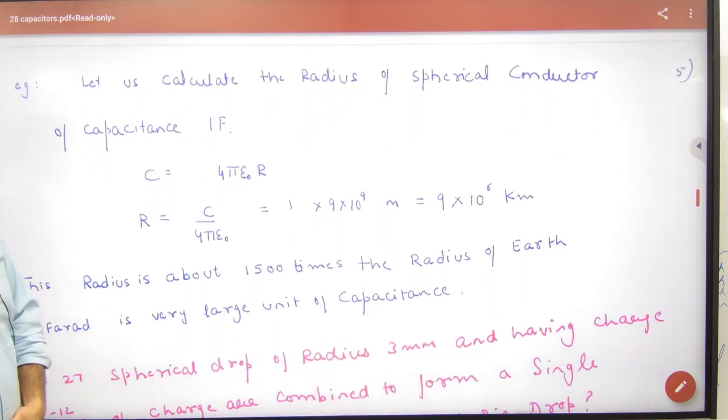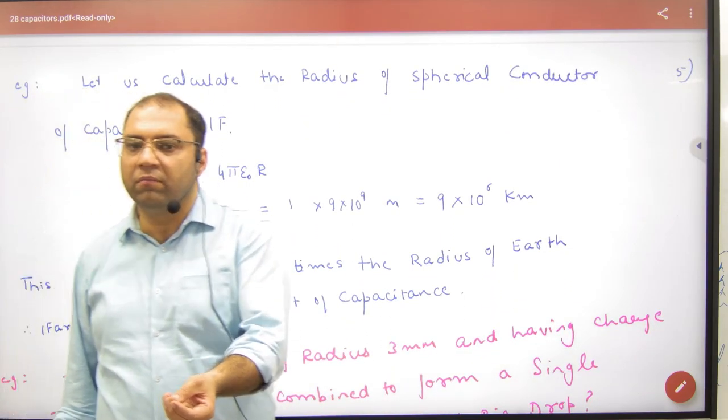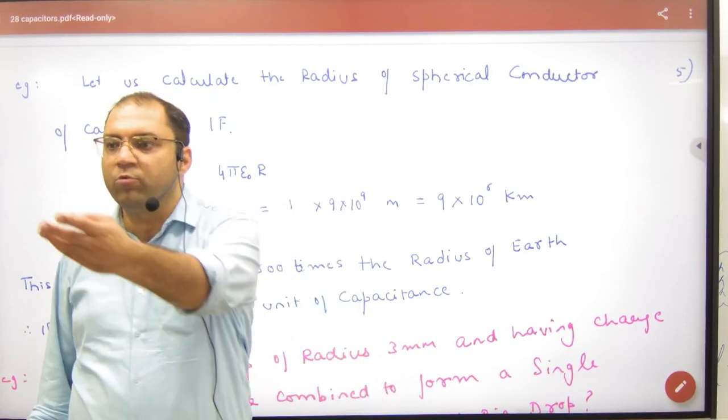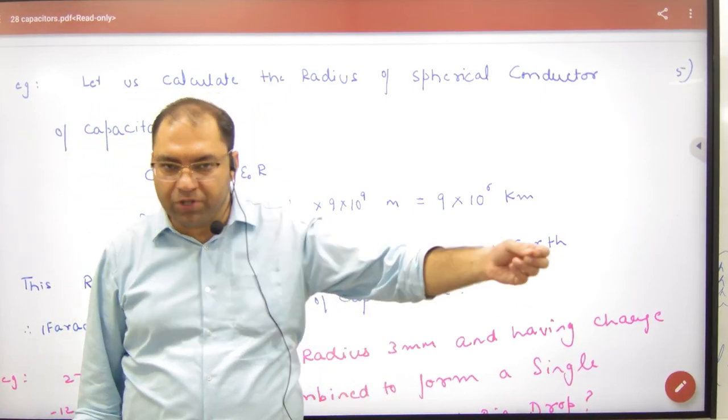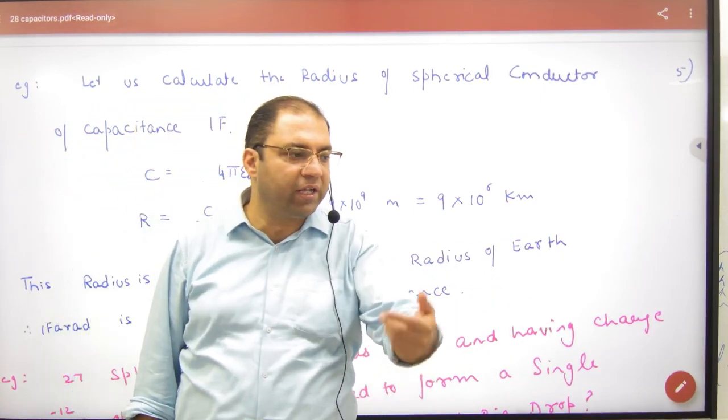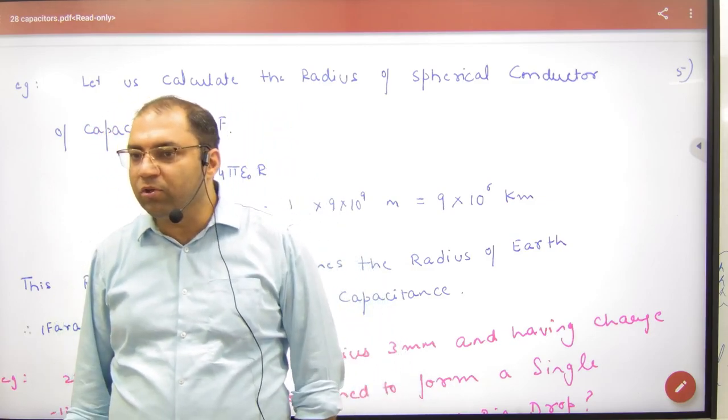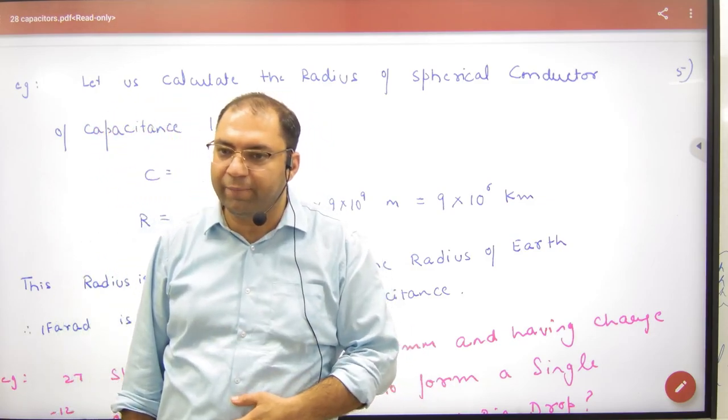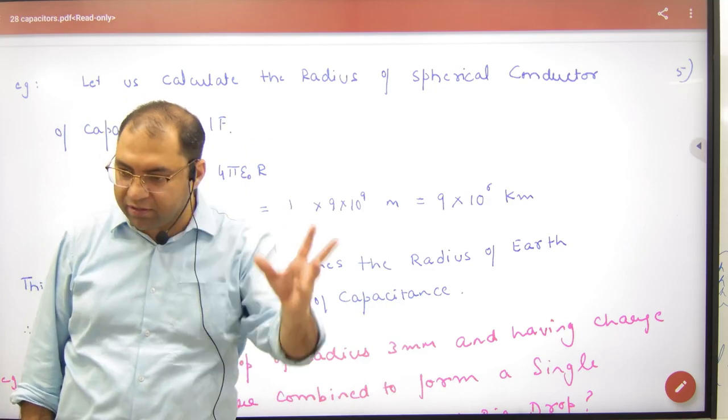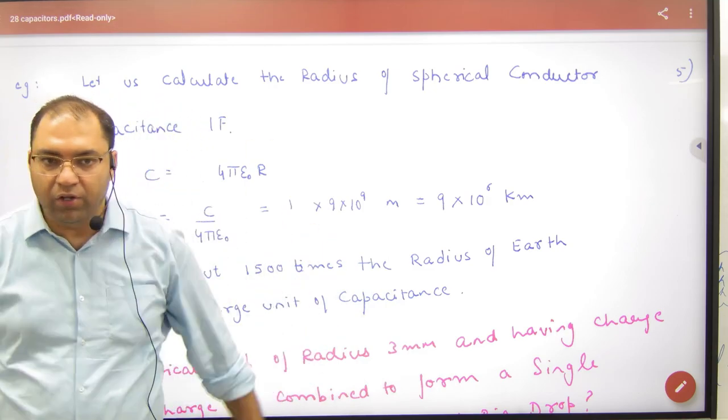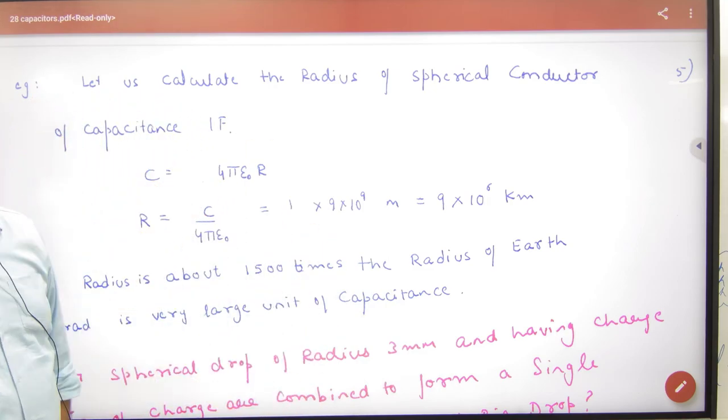Now suppose you go to the market and ask for a one farad capacitor - a sphere. What will be its radius? The capacity is 4π epsilon not r.